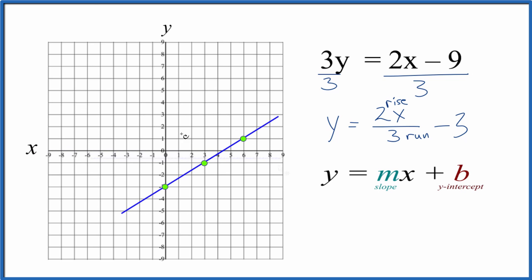Let's put a line through that. We'll put arrows to show that this goes to infinity, and that's the graph for 3y equals 2x minus 9.